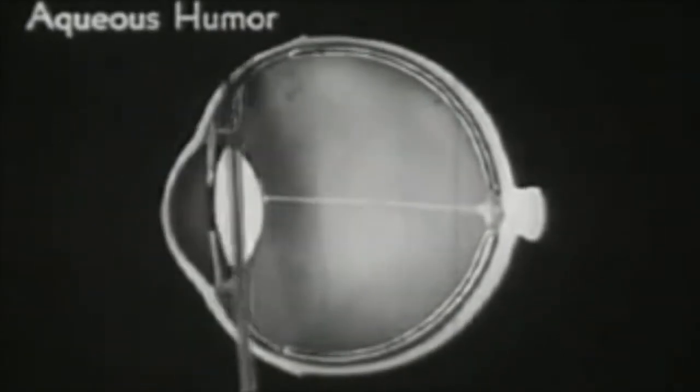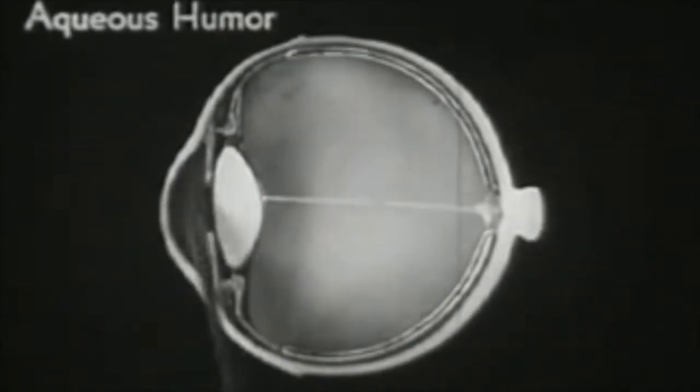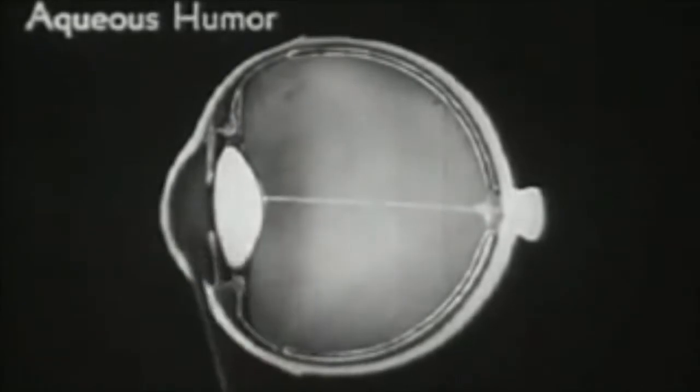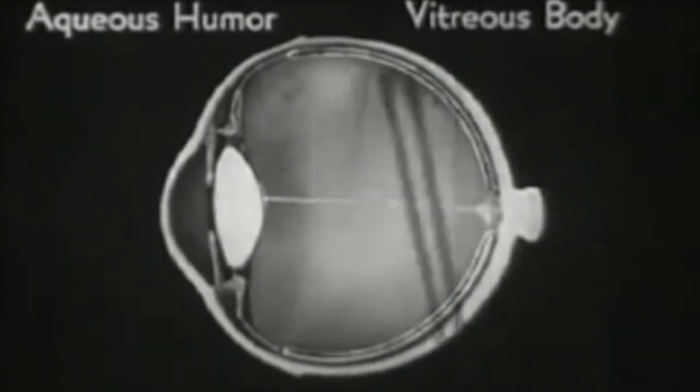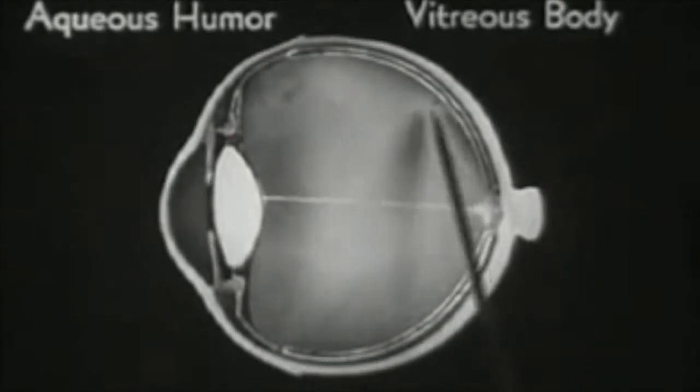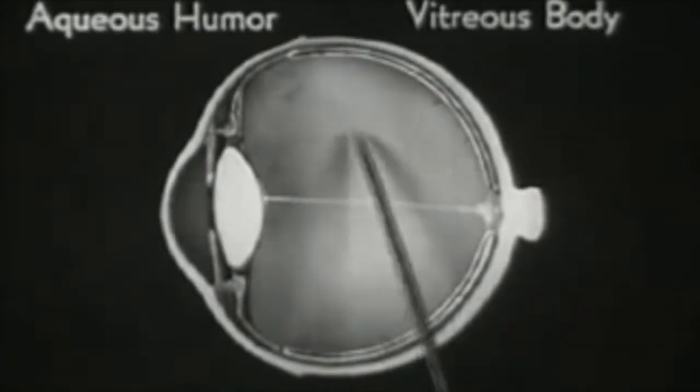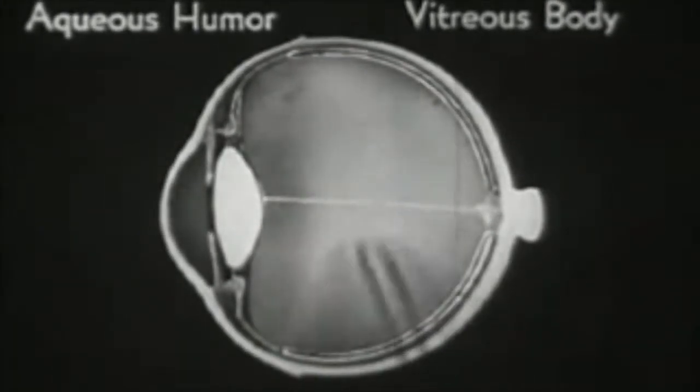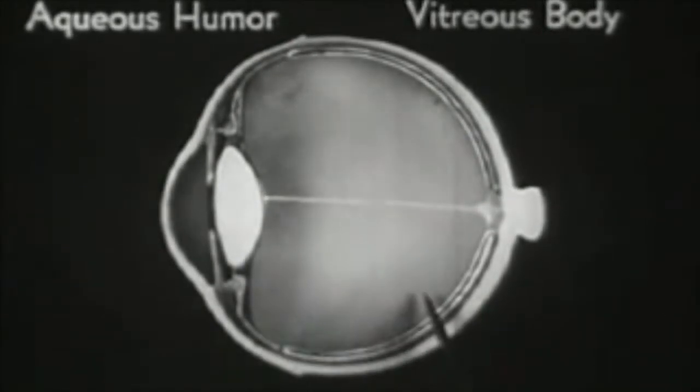Between the lens and the cornea is the aqueous humor, consisting mostly of water and a little salt. This larger space within the eye is filled with the vitreous humor or body, consisting chiefly of water with some salt and albumen. The vitreous humor is really a highly transparent jelly and plays a very important part in the act of visual adjustment.